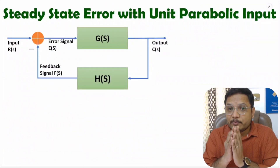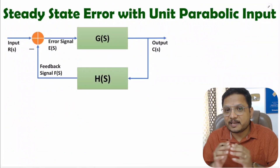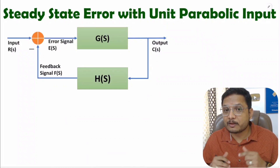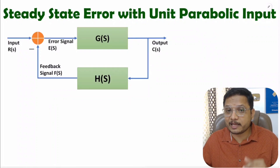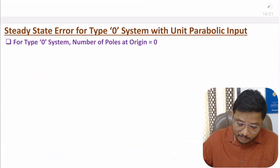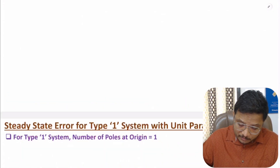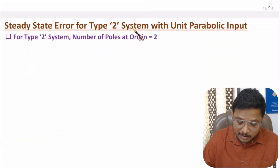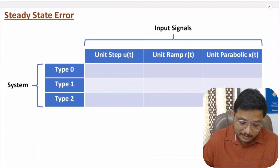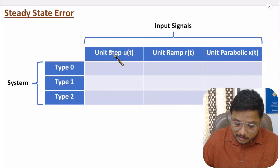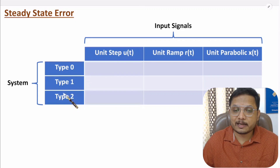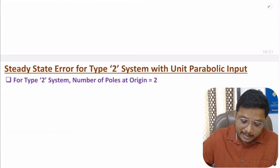Hello friends, welcome to Engineering Funda family. In this video I will explain steady state error with unit parabolic input. I will also explain steady state error with type 0 system, type 1 system, and type 2 system, and at last I will summarize steady state error with different input signals and different type signals.